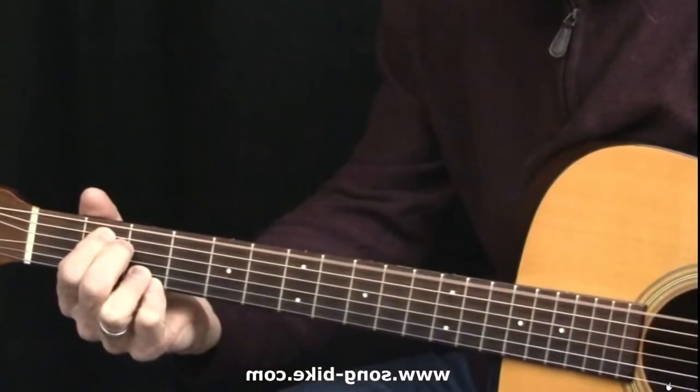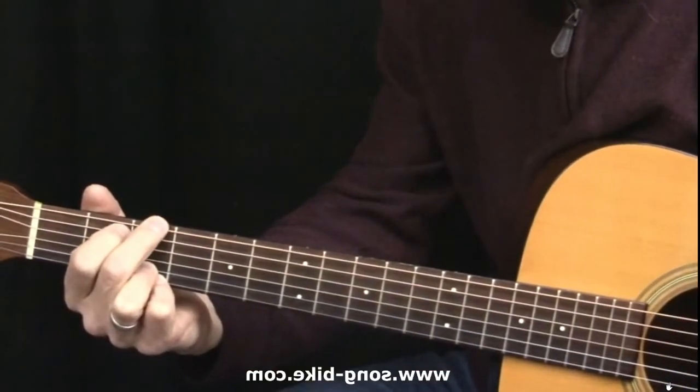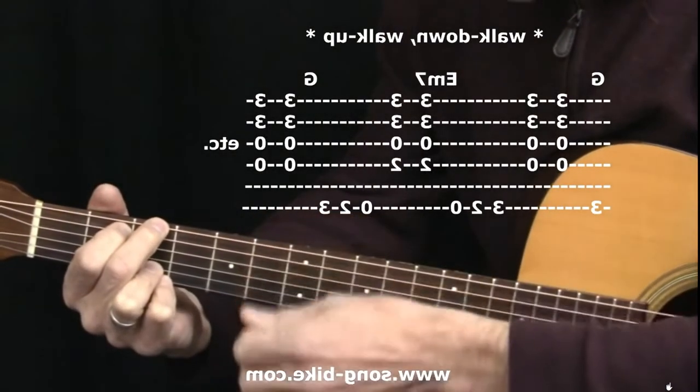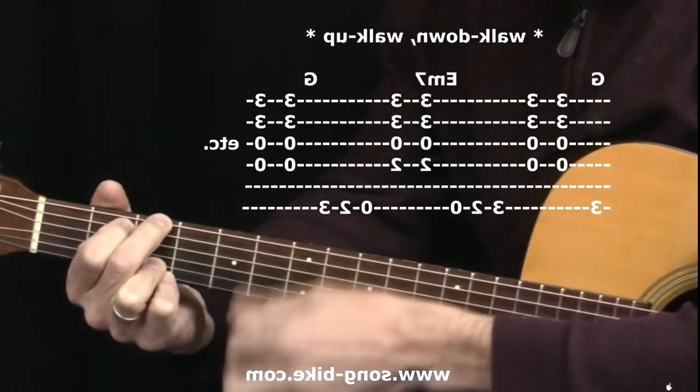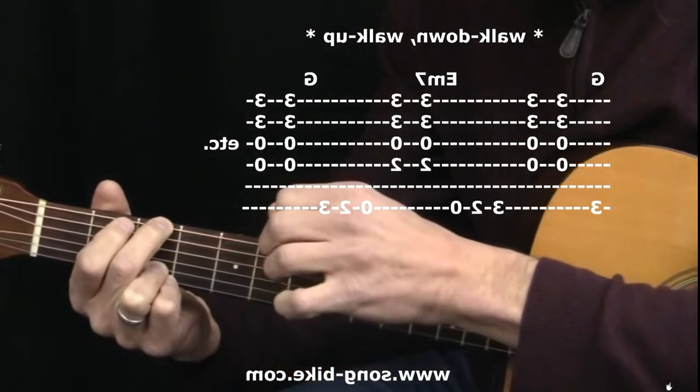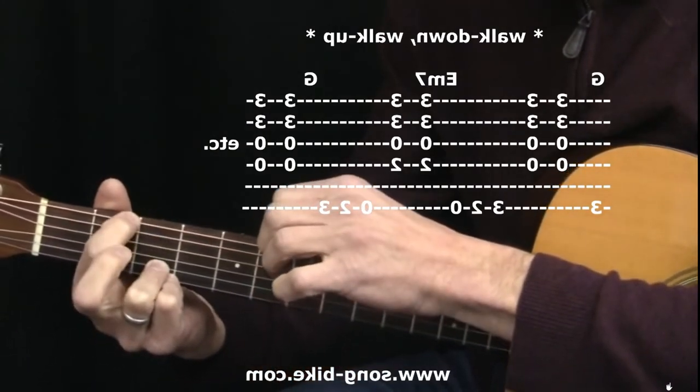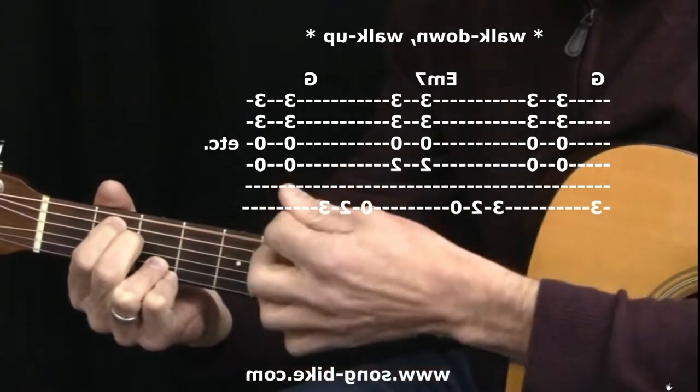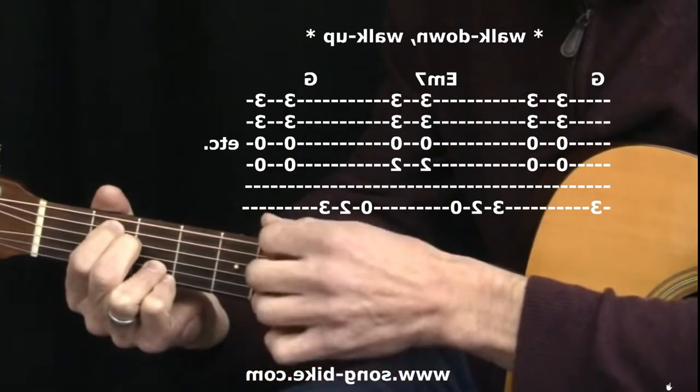Notice I'm connecting the G and the E minor with that walk down. In slow motion: sixth string on the G and a couple strums. Now here's my walk down: sixth string third fret, sixth string second fret with my index finger, open sixth string, and here's my E minor for two strums. I'm going to reverse it.